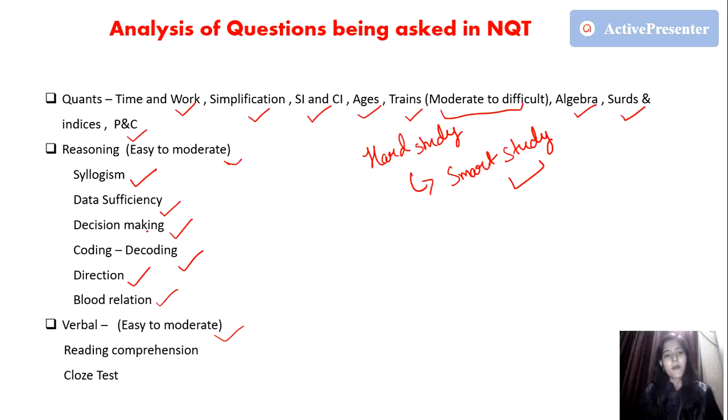Next section is the Verbal section. Basically, students are getting questions from reading comprehension and cloze test. Verbal was easy as they have told - verbal was kind of easy and reasoning was also easy to moderate.